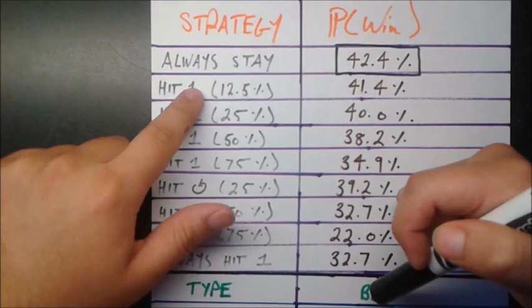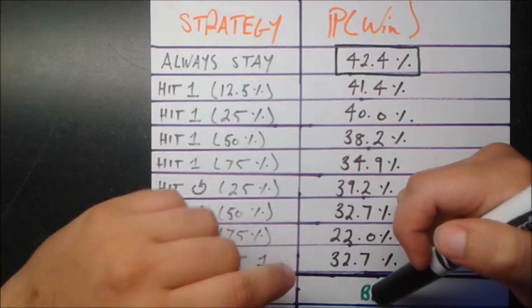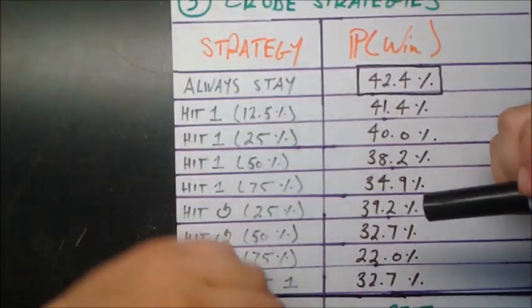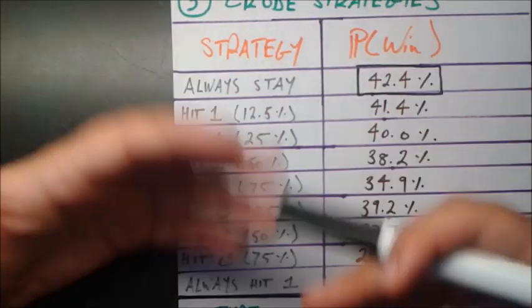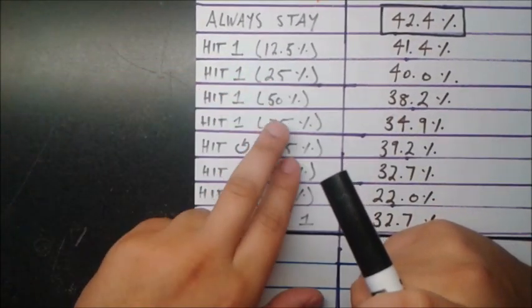So all these ones that say hit are all different kinds of hit regimes. So this is hitting one an eighth of the time, so 12.5% of the time. So that means that 12.5% of the time, you're going to hit one, regardless of what the cards even are on the field. And again, this is 25% of the time, 50% of the time, 75% of the time.